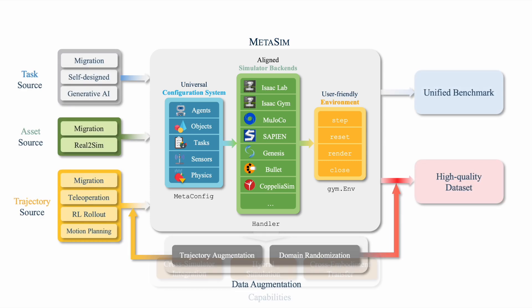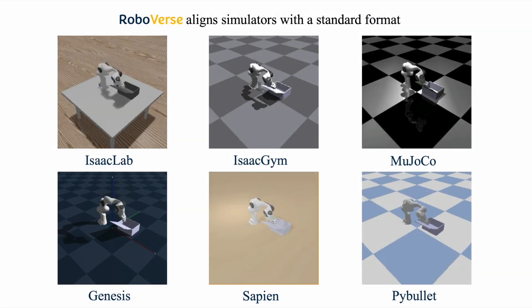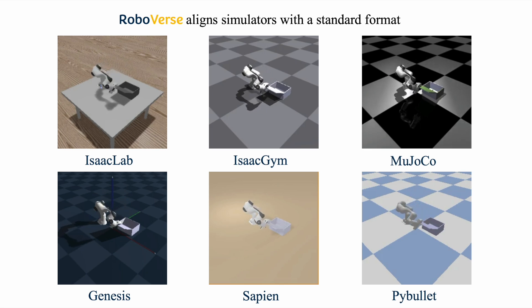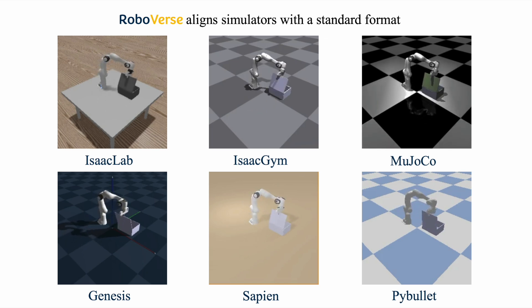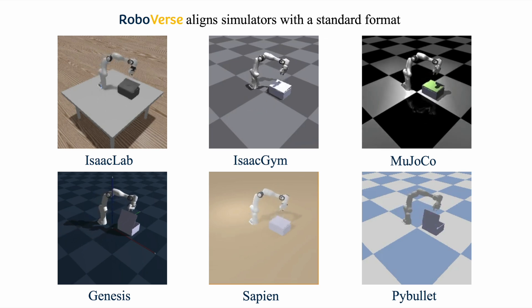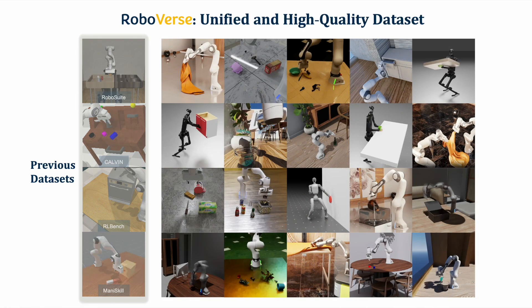We design a universal configuration system and an aligned simulation infrastructure to combine the existing simulators under one platform. With MetaSim, you can use any simulator with the same code. Empowered by MetaSim, we can make full use of the cutting-edge physics engine and renderer at the same time.